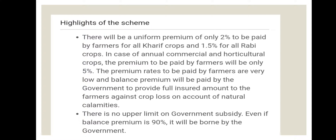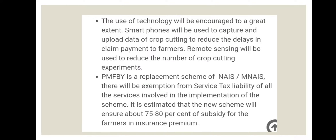There is no upper limit on government subsidy. Even if the balance premium is 90 percent, it will be paid by the government entirely. The use of technology will be encouraged to a great extent. Smartphones will be used to capture and upload data of crop cutting to reduce delays in claim payment to farmers. Remote sensing will be used to reduce the number of crop cutting experiments.